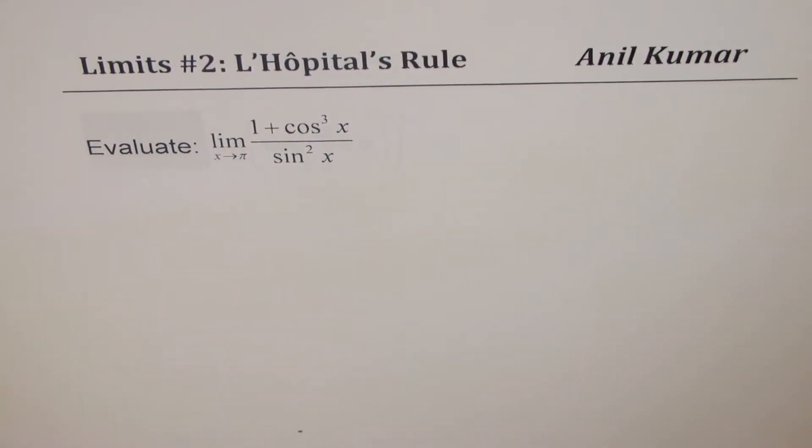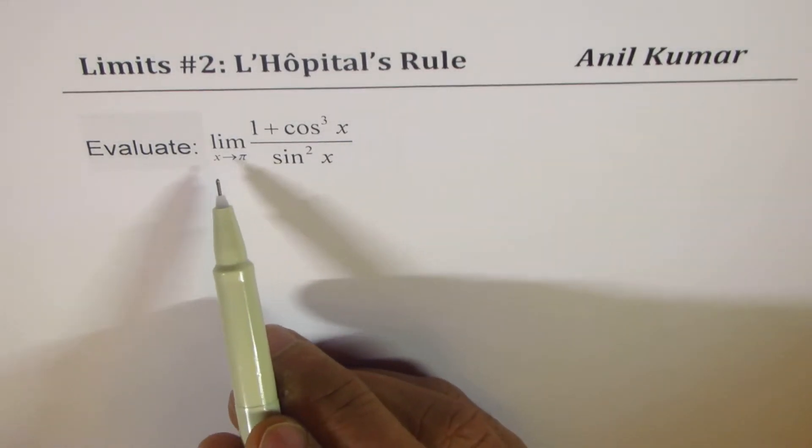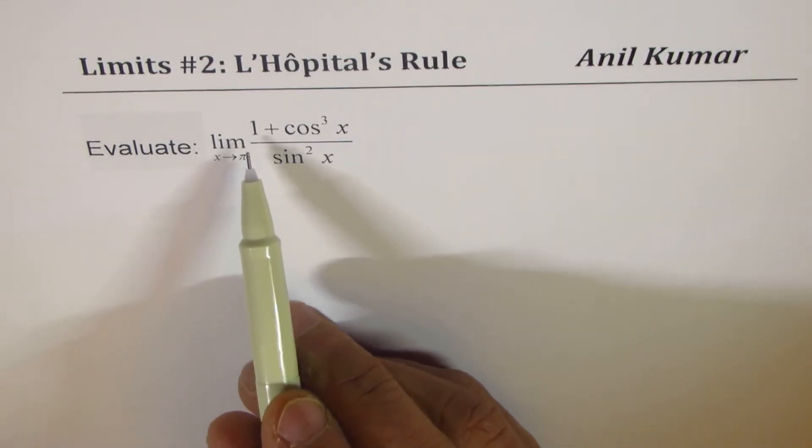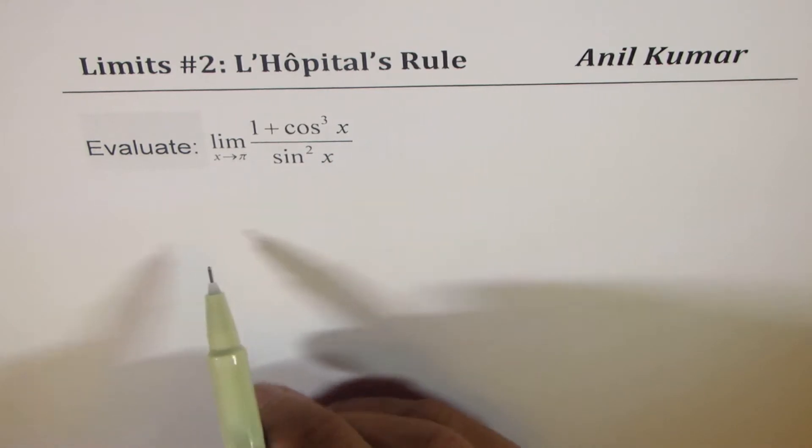Here is another example on trigonometric functions. We need to evaluate the limit as x approaches π for (1 + cos³x) / sin²x.